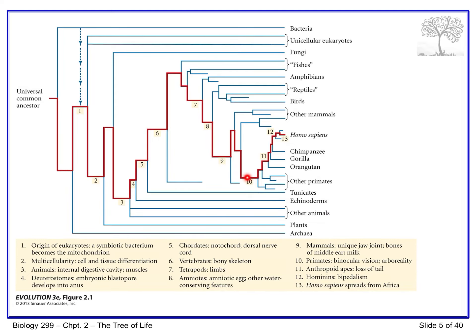Similarly, number ten: the primate condition evolved at a specific node, so everything after that should be primate, distinguishing them from other mammals. By looking at common features of modern organisms, we can reconstruct or back-calculate what evolutionary changes must have given rise to the modern condition.